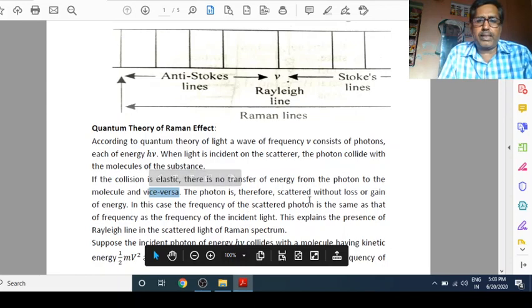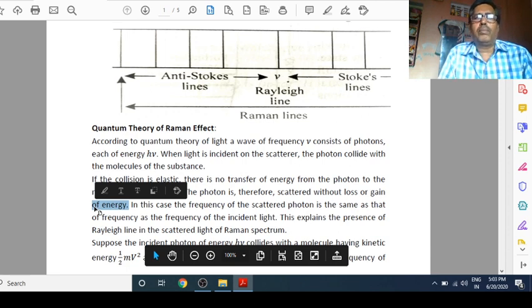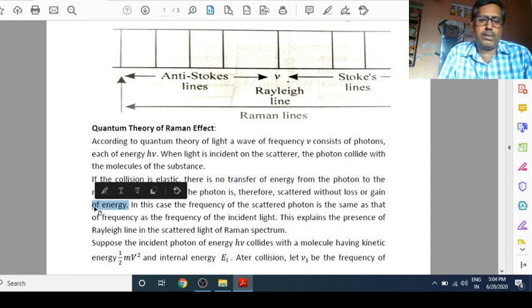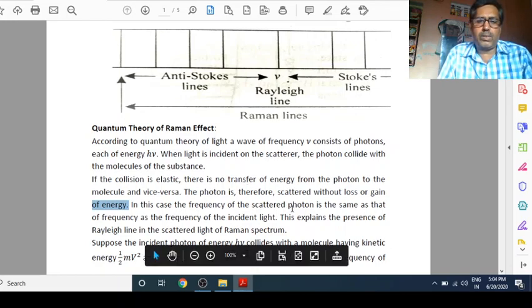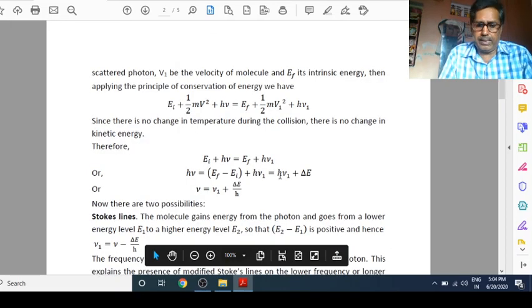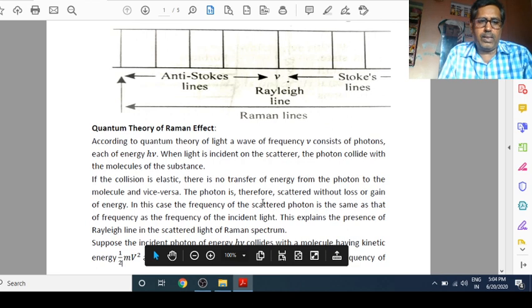When light is incident on the scatterer, the photon collide with the molecules of the substance. Here collision may be elastic or inelastic. So let us consider elastic collision. If the collision is elastic, there is no transfer of energy from photon to the molecule and vice-versa. The photon is therefore scattered without loss or gain of energy. Because here neither molecule receives energy nor loses energy. Since collision is elastic, there is no transfer of energy. In this case, the frequency of the scattered photon is the same as that of frequency of the incident light. This explains the presence of Rayleigh lines.